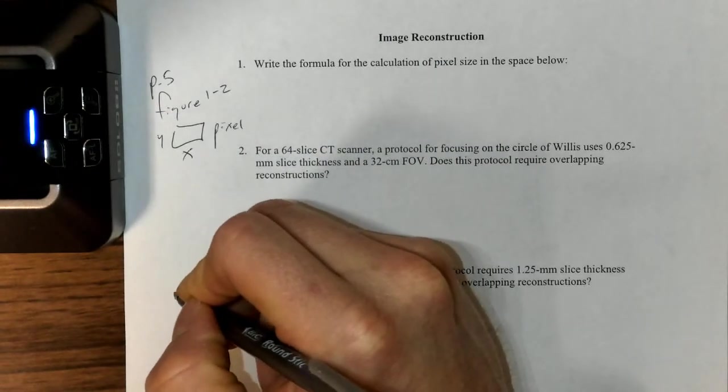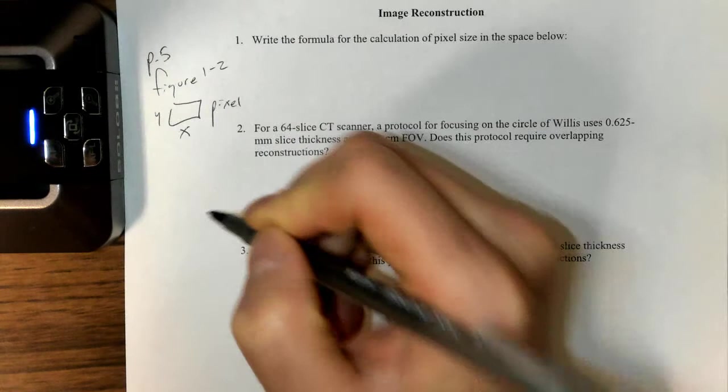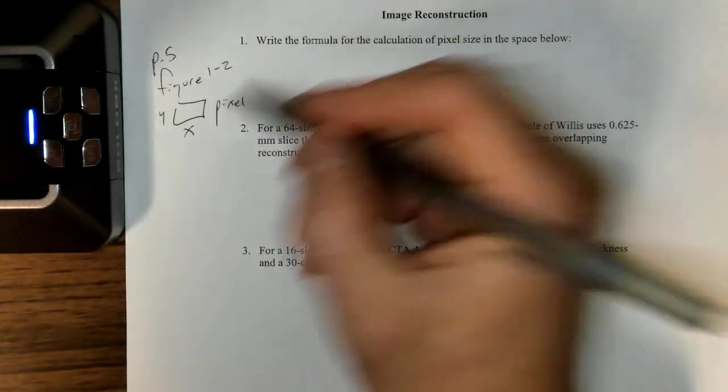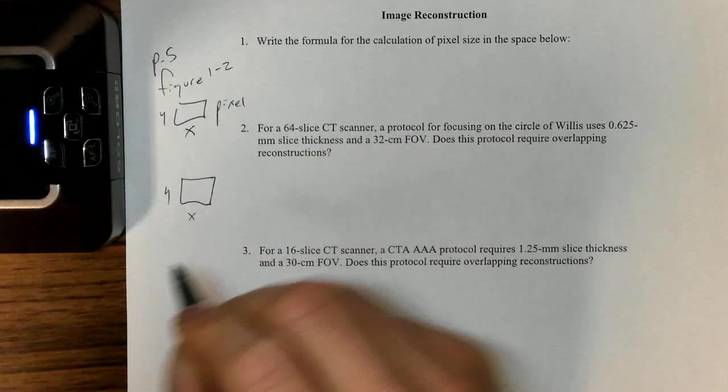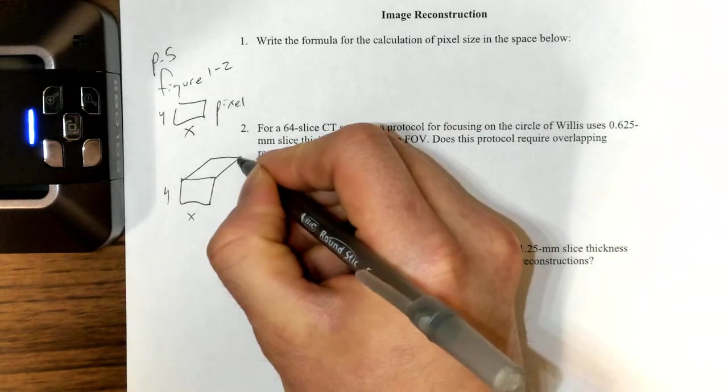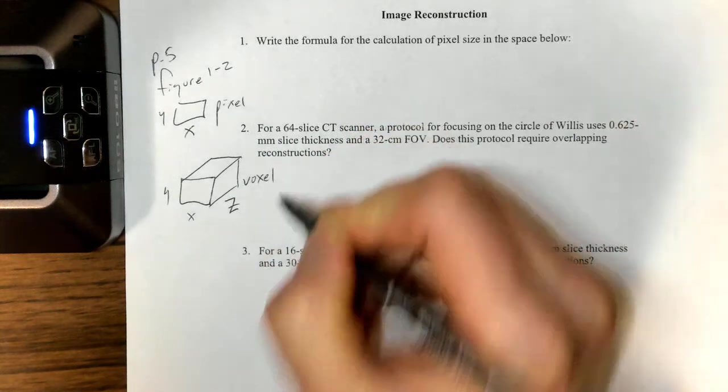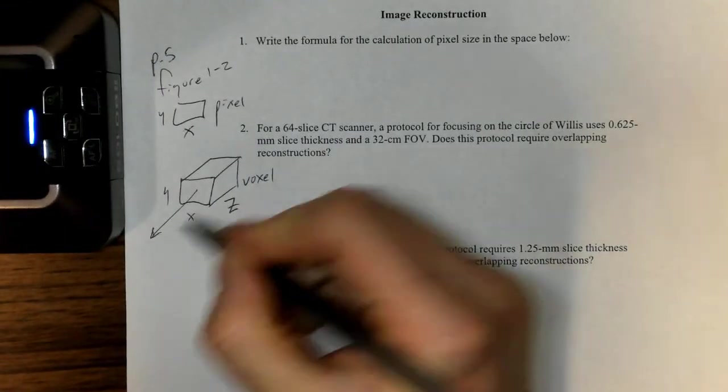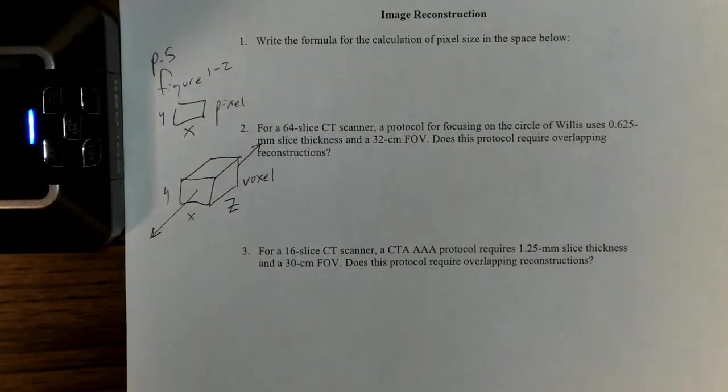If we move along and actually bring in that z-axis consideration like we were just talking about, then we also need to think about the voxel. The voxel has the same x and y dimensions, exactly the same, but it adds a z-axis as well. Like we've said, this z-axis is the axis of travel through the CT scanner. One way to think about it is this is actually the patient's body traveling through the CT scanner along the z-axis.